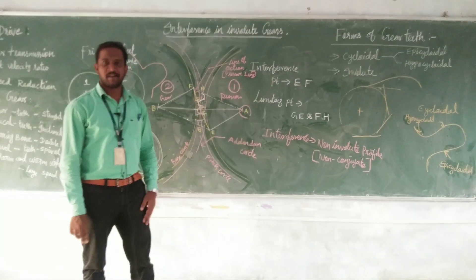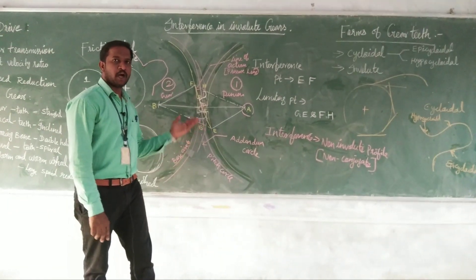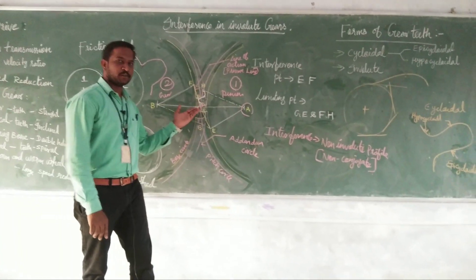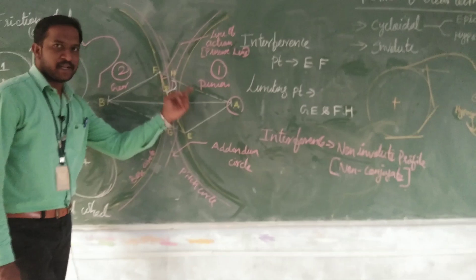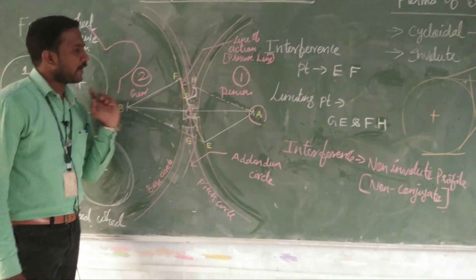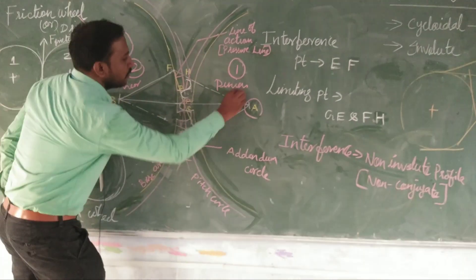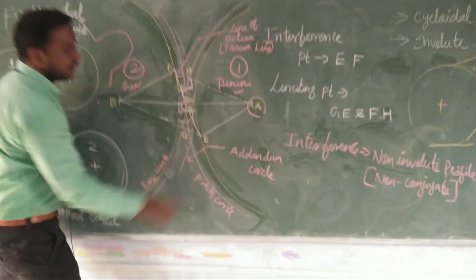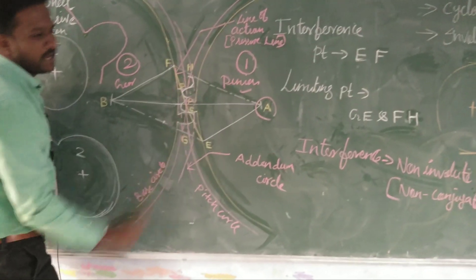Let me explain what is meant by interference. First, I will explain how the drawing has been shown. Here I have shown the pinion as an input and gear as an output. If you take the pinion, I have drawn a pink color circle here, that is called the pitch circle with respect to the pinion.